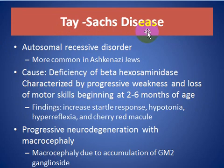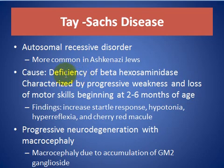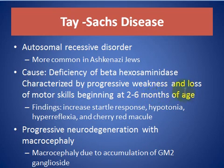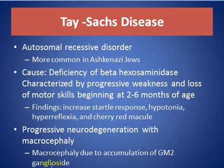Tay-Sachs disease is autosomal recessive and more common in Ashkenazi Jewish populations. There is a deficiency of beta-hexosaminidase, characterized by progressive weakness and loss of motor skills beginning at 2 to 6 months of age. Findings include increased startle response, hypotonia, hyperreflexia, and cherry-red macular spots. There is progressive neurodegeneration with macrocephaly due to accumulation of GM2 gangliosides.